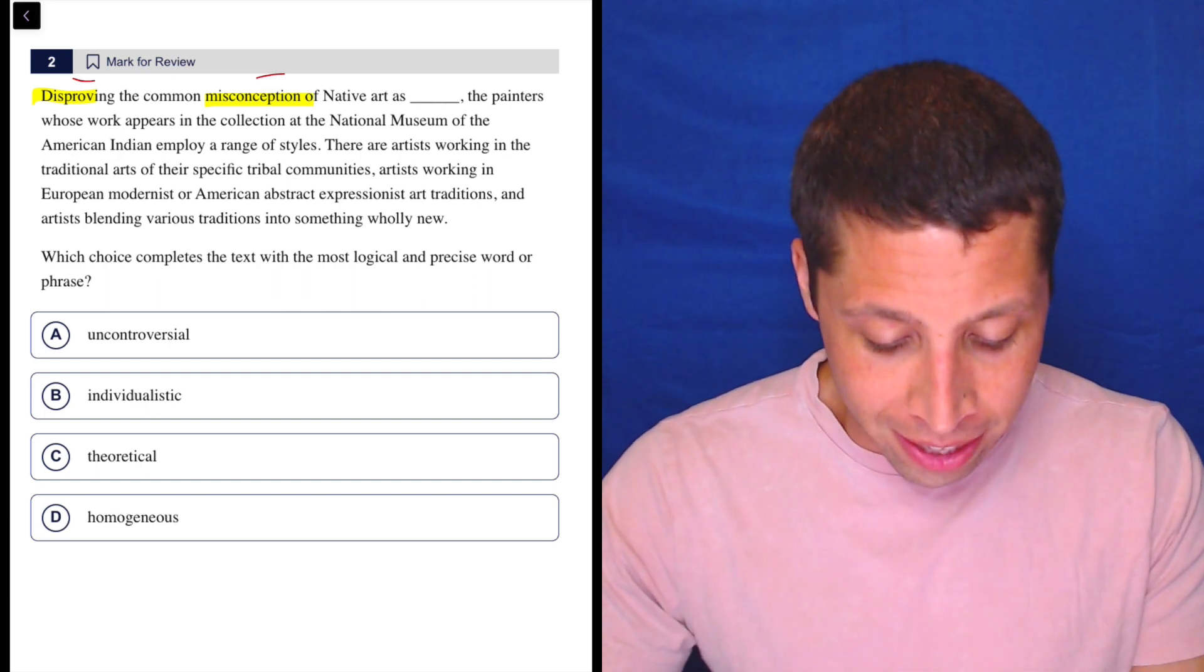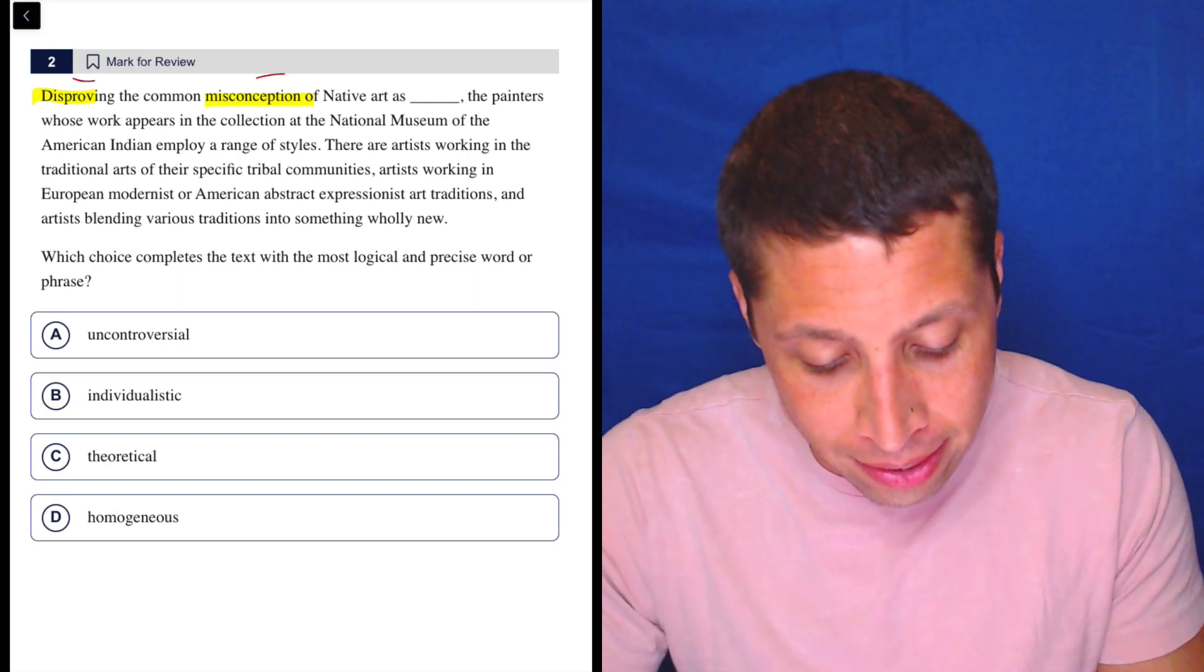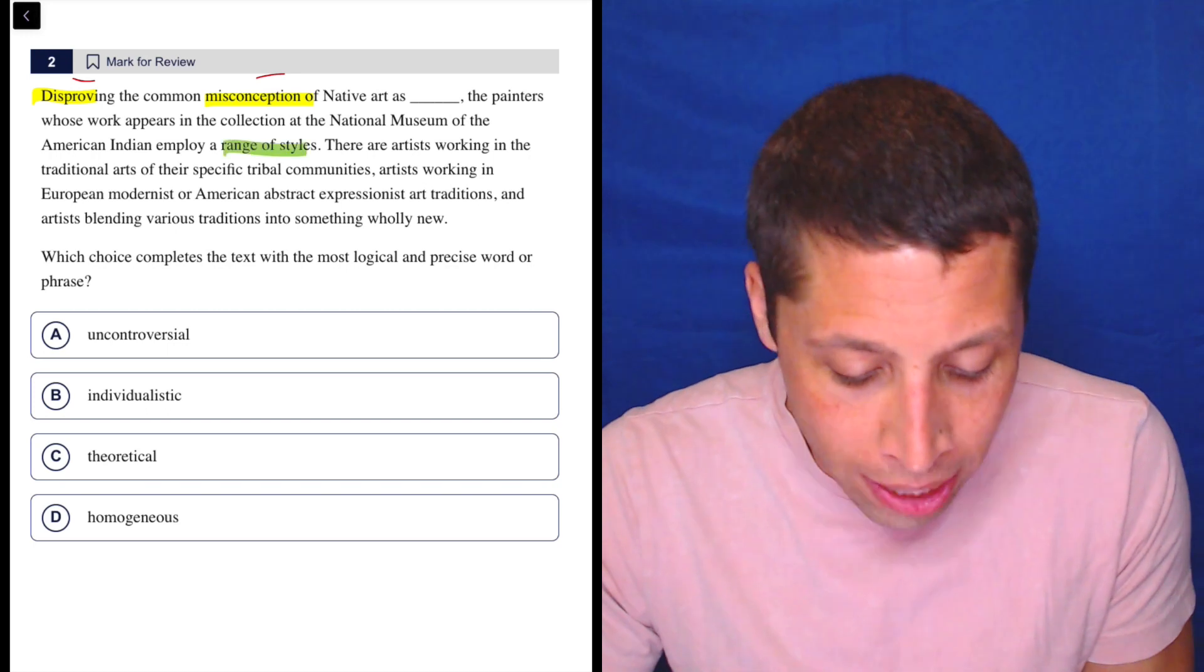Let's just continue with the paragraph and see what we get. The painters whose work appears in the collection at the National Museum of the American Indian employ a range of styles. Okay, that seems actually important. Range of styles.